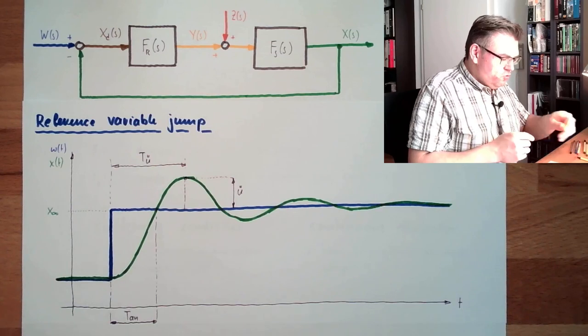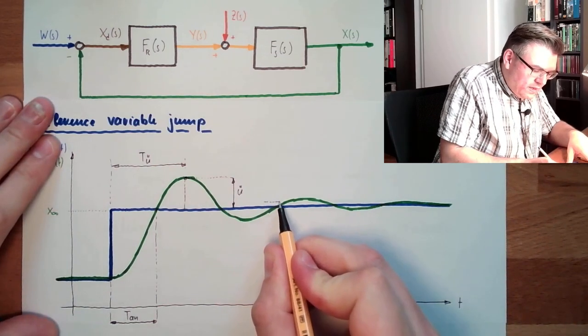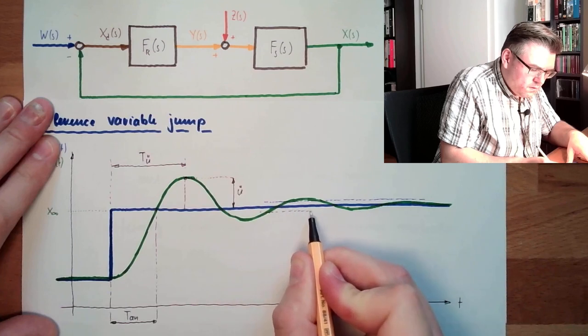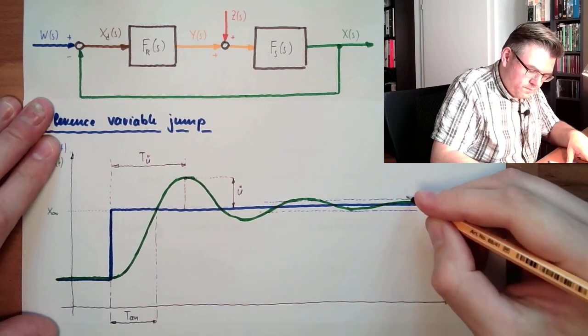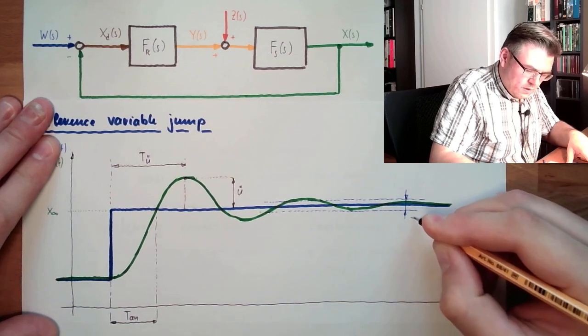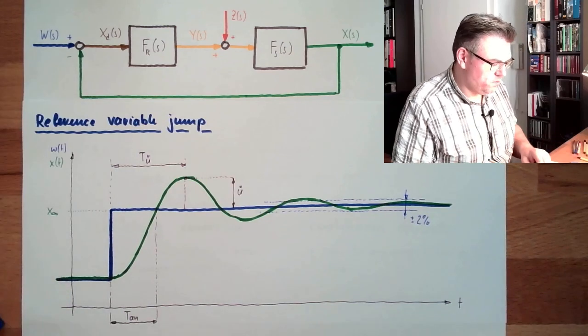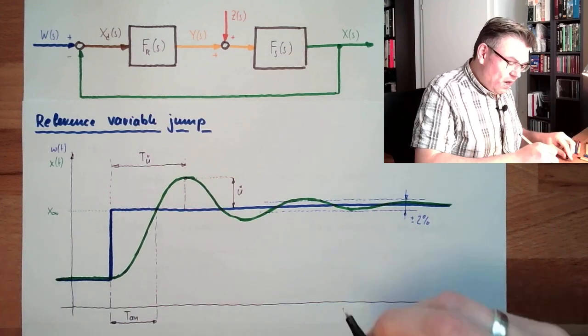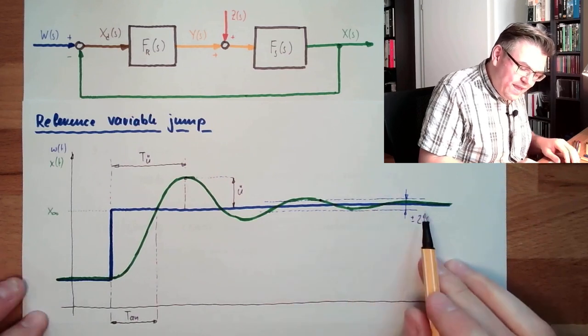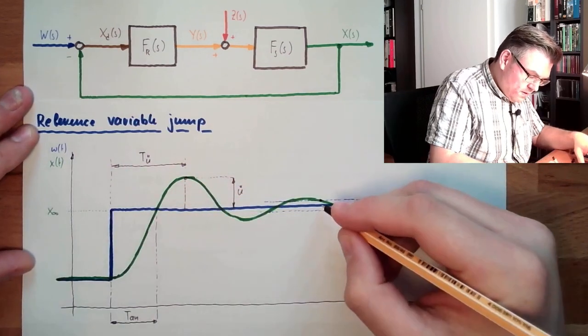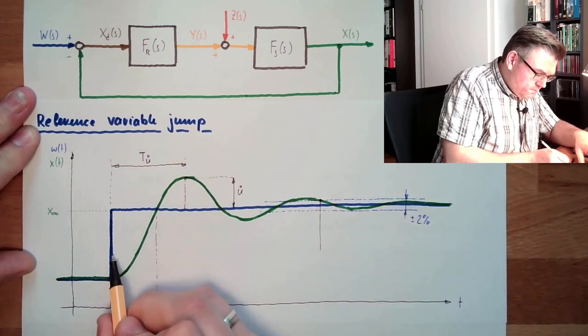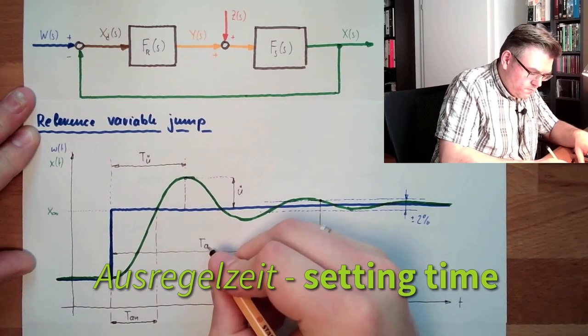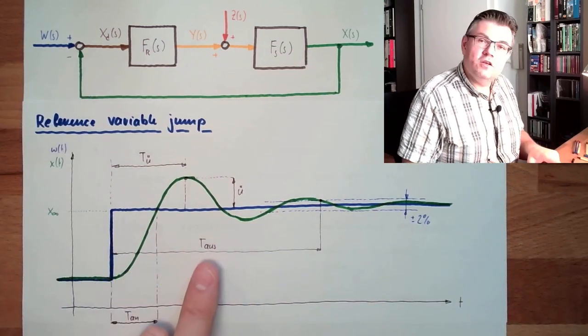And then there is a certain tolerance area around this. Let's say it looks like that, plus minus two percent. And the last time we are exceeding this plus minus two percent in our example is here, because afterwards we will stay inside this tolerance window. So this time, in German it's the so-called Ausregelzeit, and in English it's called setting time.